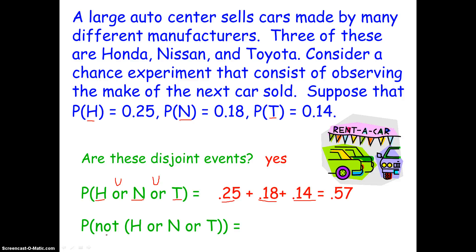Now here's a next level question. The probability that the next car bought is not a Honda or a Nissan or a Toyota. Well, we already know that the probability of buying the next car being a Honda, Nissan or Toyota is 0.57, right? And the complement rule we saw a couple of slides ago says the probability of some event occurring plus the probability of that event not occurring is equal to one. So if we subtract this probability from one, we get the probability that the next car bought will not be a Honda or Nissan or Toyota.